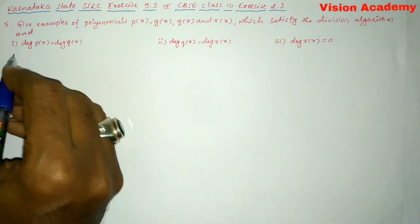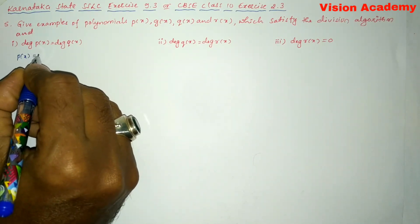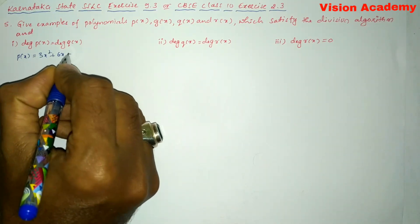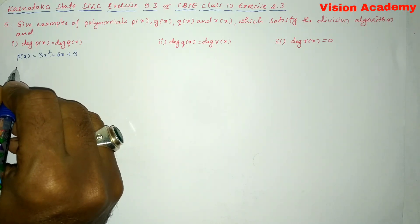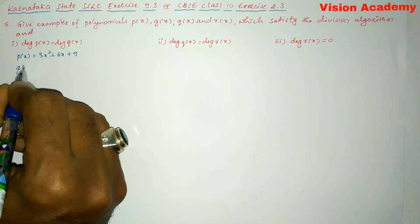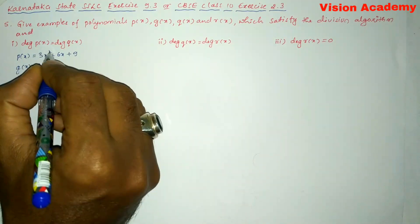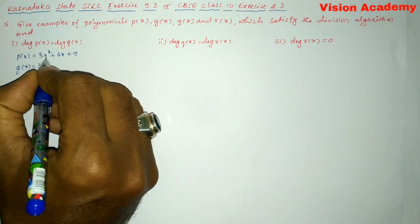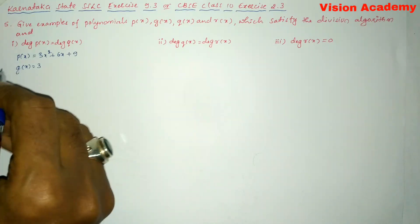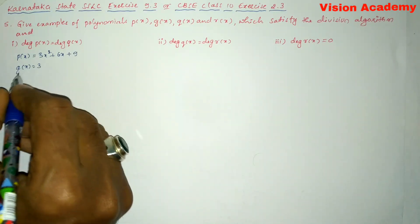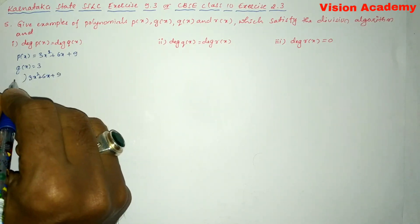Let us find the solution. Here let us consider p(x) = 3x² + 6x + 9, and let us take g(x) = 3 as the divisor. You can see the degree of p(x) is 2 — that is, the highest power of this term is 2 — and g(x) is 3. Let us divide this polynomial by 3.